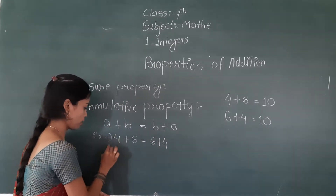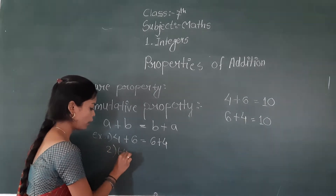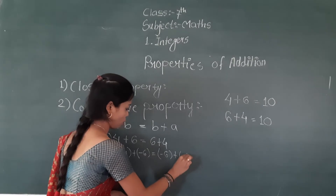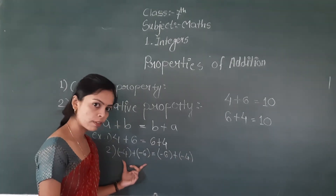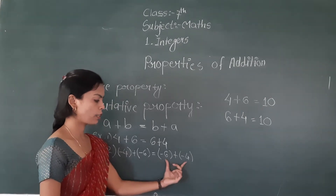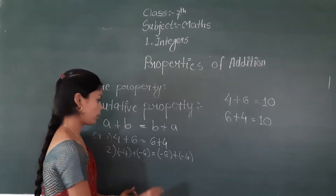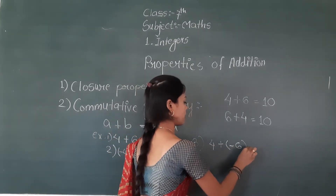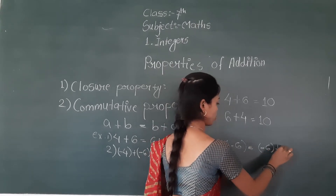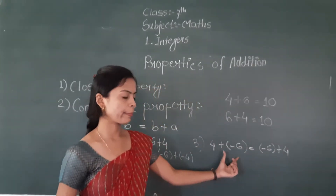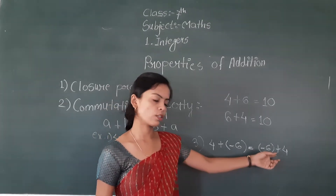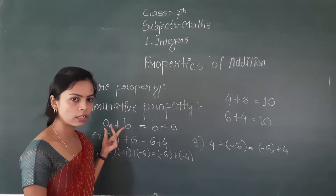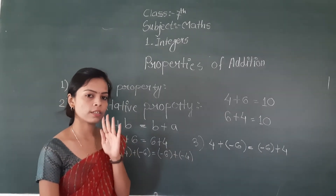Both are positive. Second example: four plus minus six equals minus six plus minus four, which equals minus ten. Third example: four plus minus six equals minus six plus four, and this also gives minus two. So both sides give the same answer.